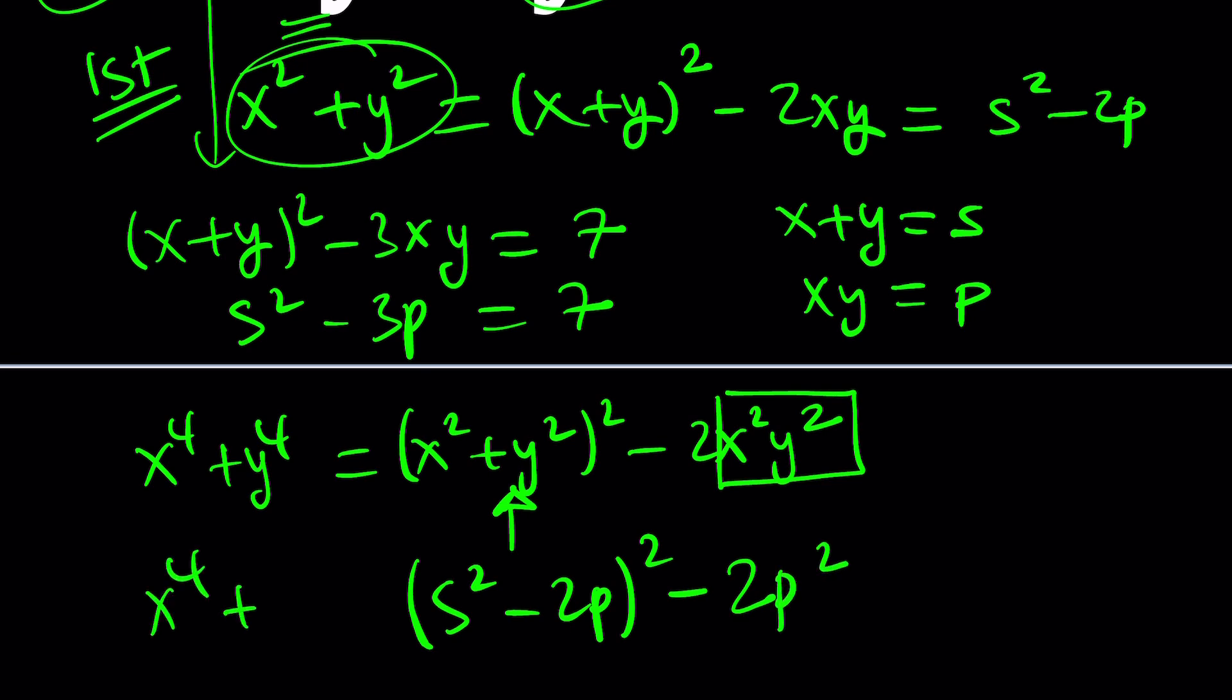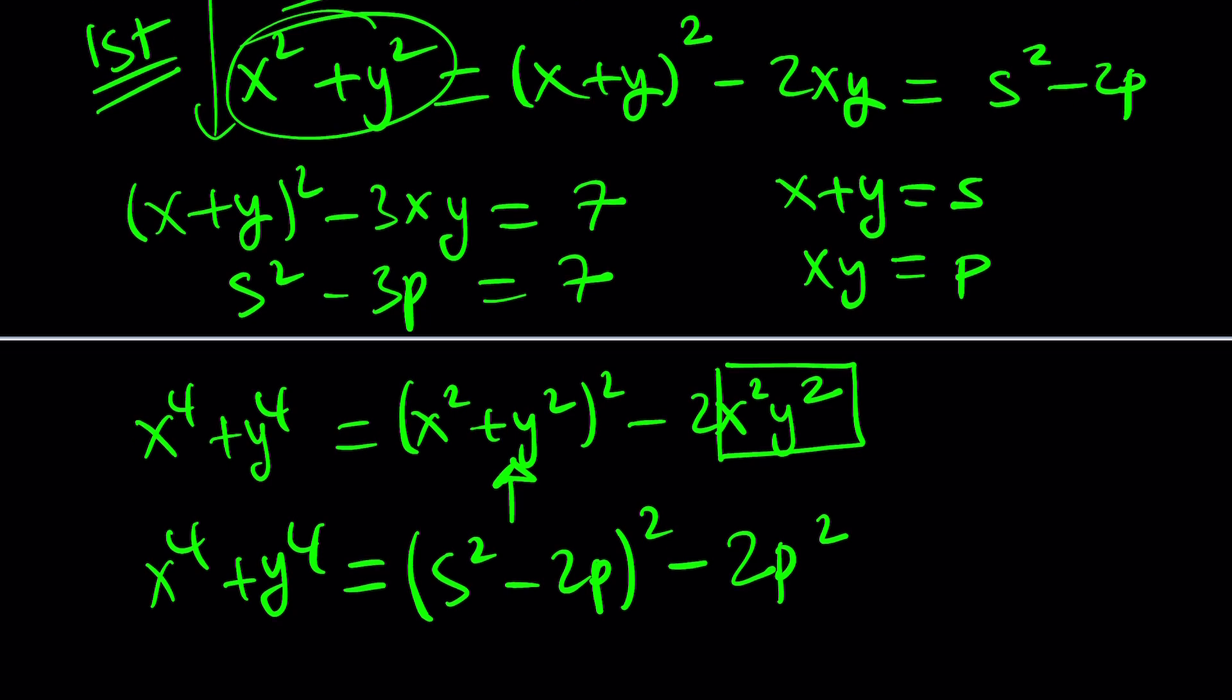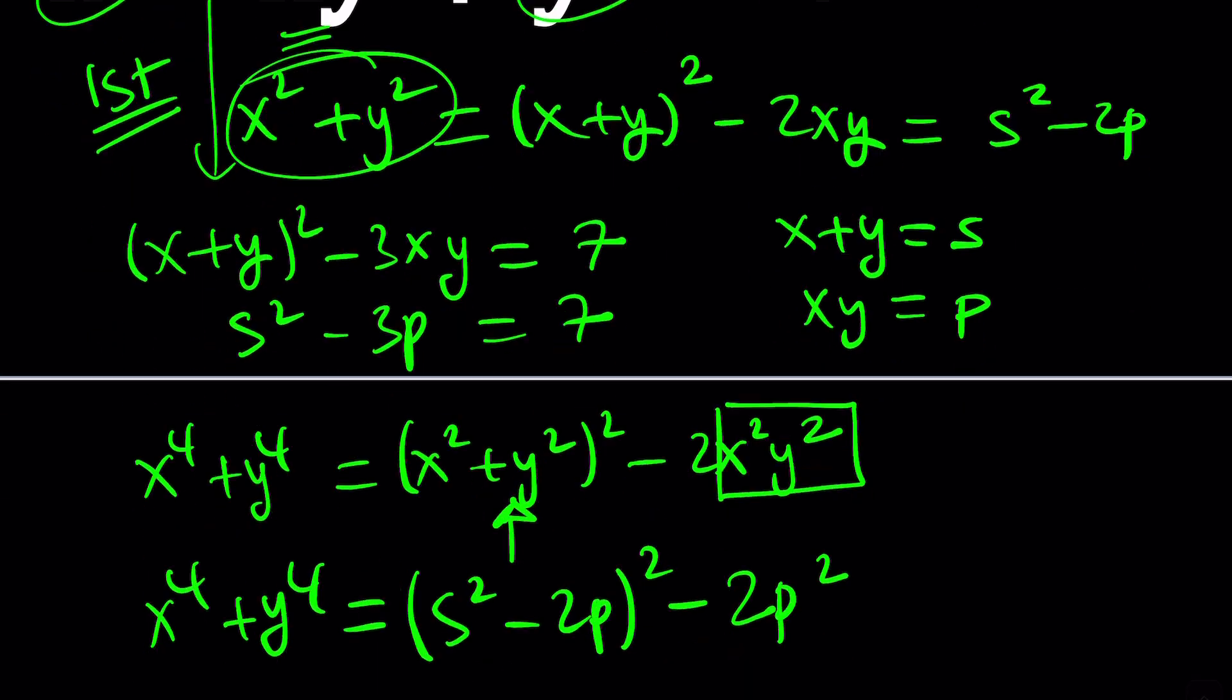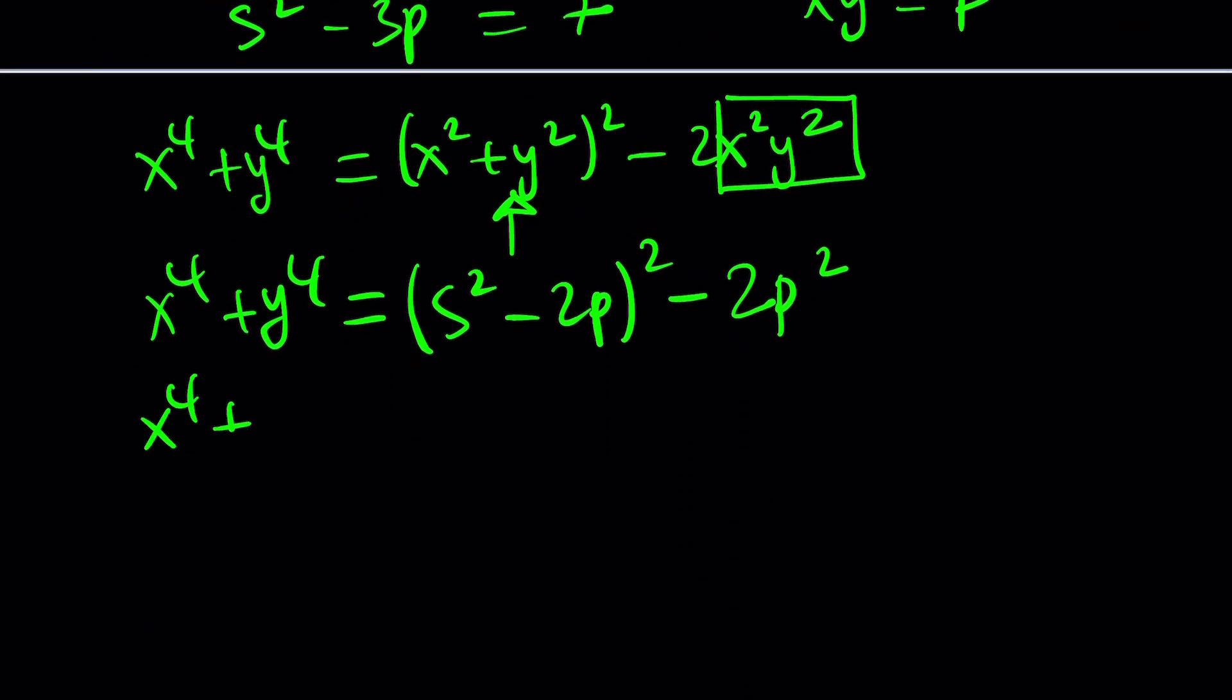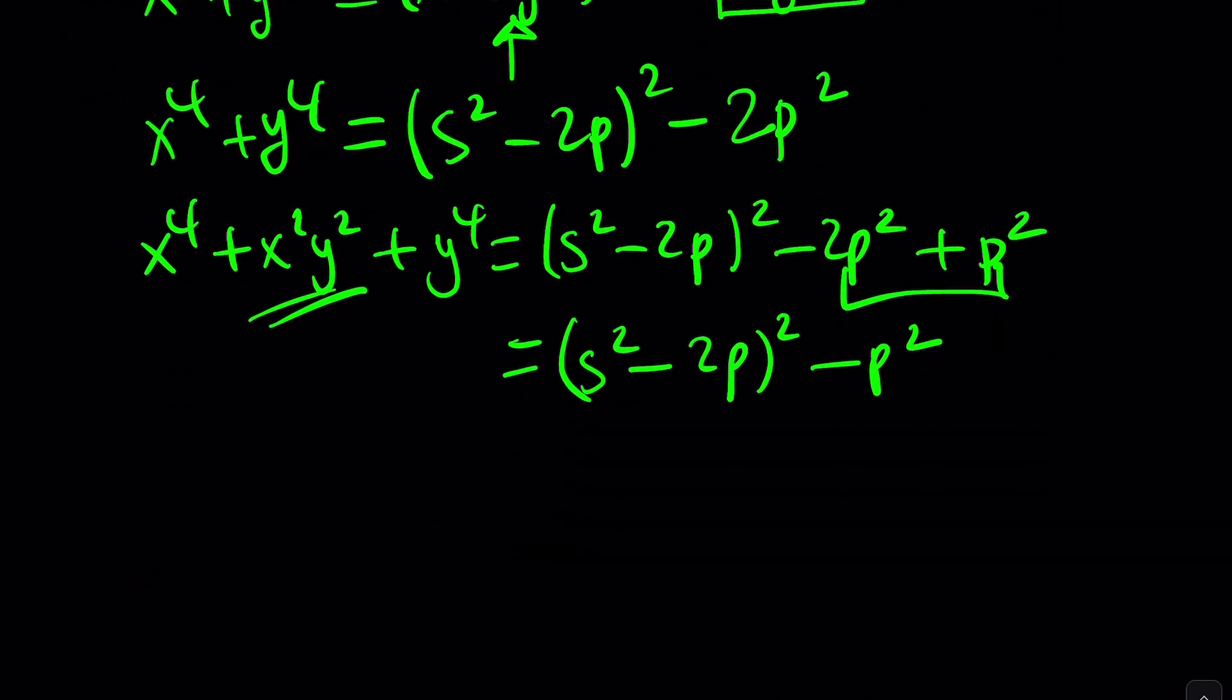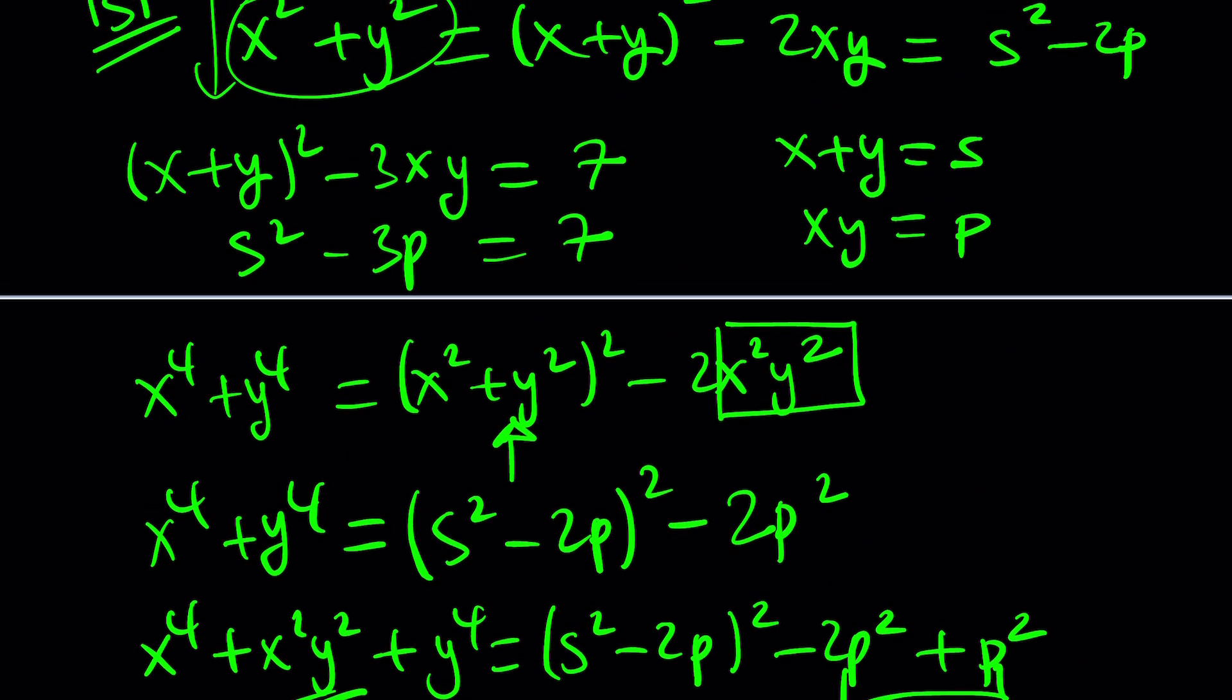So we were able to write the sum of the fourth powers in terms of s and p, but then we need to do it for x squared y squared as well, but that's just p squared. So now, x to the fourth plus x squared y squared plus y to the fourth would be s squared minus 2p quantity squared minus 2p squared plus p squared because of this. Now, this makes negative p squared, so we get s squared minus 2p quantity squared minus p squared. And where does that come from? From the first equation, which is equal to 91.